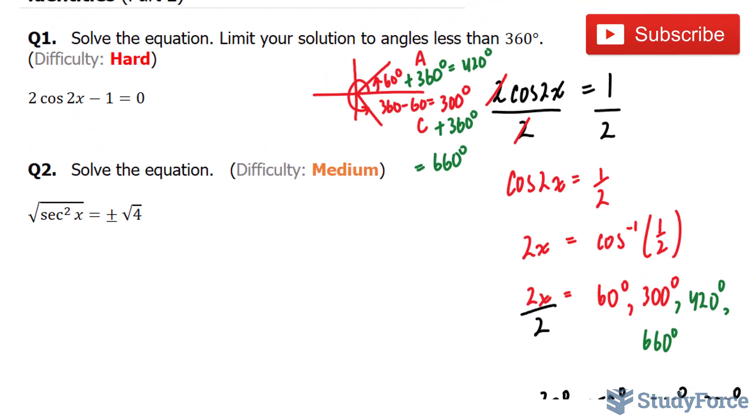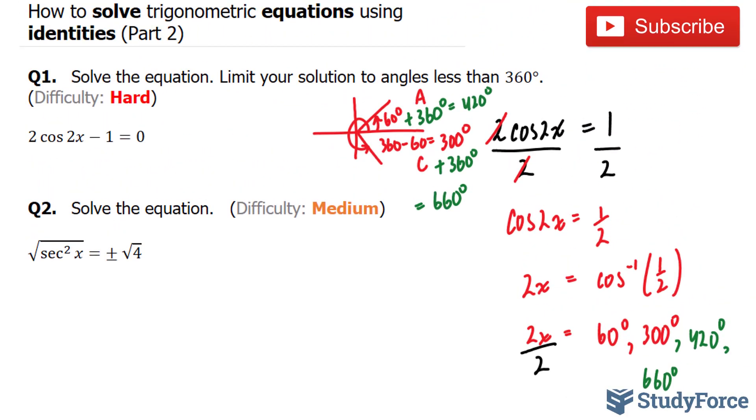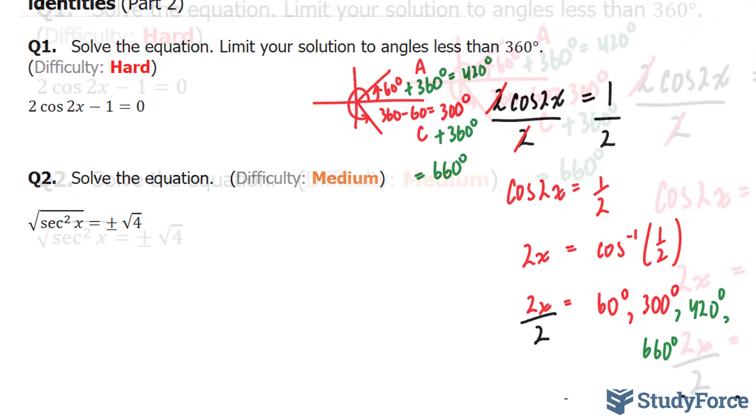Let's move on to question 2. In question 2, they ask us to solve the equation. The square root of secant squared x is equal to plus or minus the square root of 4.